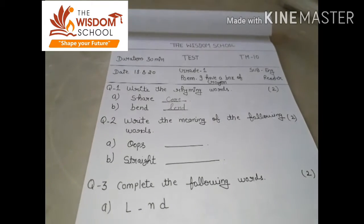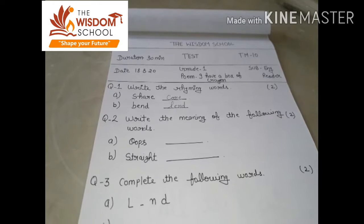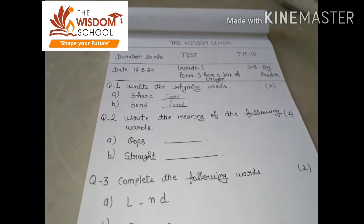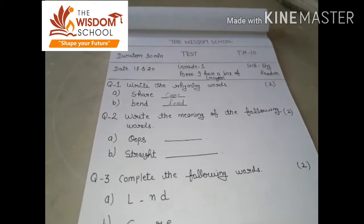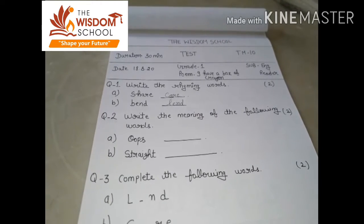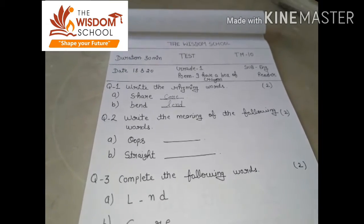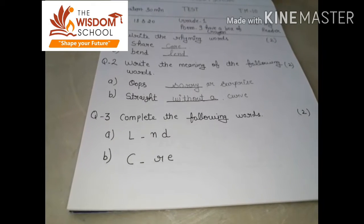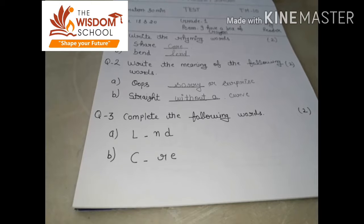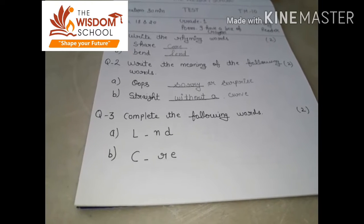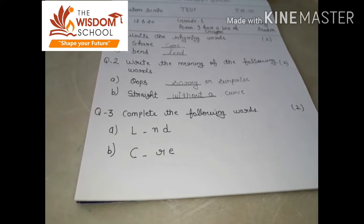Our second question is: write the meaning of the following words. Aapko in words ki meaning likhne hai. 'Ops' means sorry or surprise. 'Straight' means without a curve — bina kisi curve ke. Okay? Students, see the word meanings carefully. Ops means sorry; aap sorry or surprise mein se kuch bhi likh sakti hai. Straight — without a curve, yaani ki jo muda na ho, bilkul seedha ho.